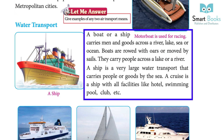Water transport: a boat or a ship carries men and goods across a river, lake, sea, or ocean. Boats are rowed with oars or moved by sails. They carry people across a lake or a river. A ship is a very large water transport that carries people or goods by the sea.